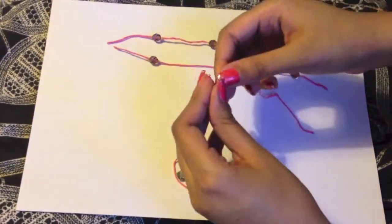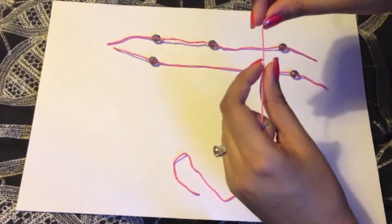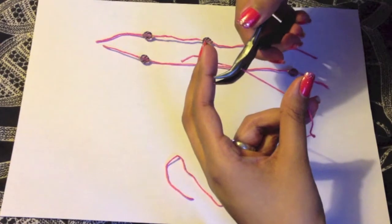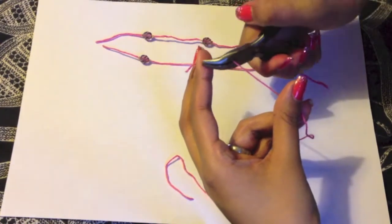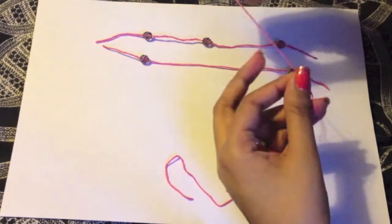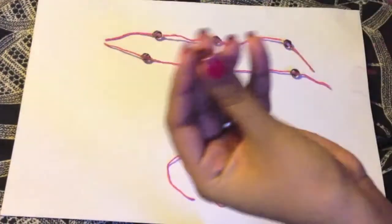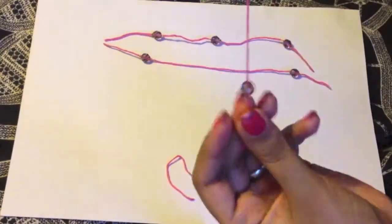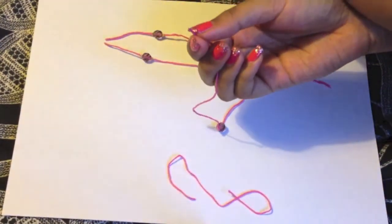Take your thread and add a crimp bead and position it one quarter down the thread and crimp it with crimping pliers. Then thread in a glass bead and add another crimp bead and secure it into place. Repeat this again three quarters down the thread. The crimping beads are great for securing ends and also stopping beads from moving.